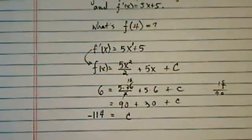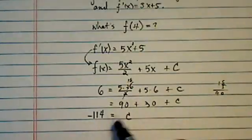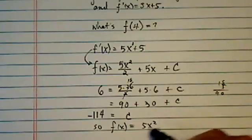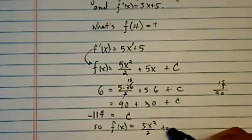This integration constant is minus 14. So we have the function then defined as 5x squared divided by 2 plus 5x minus 114.